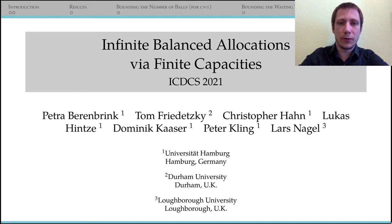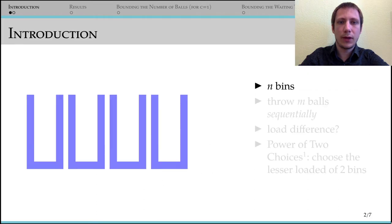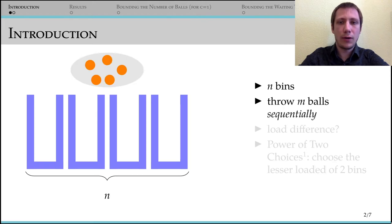Load balancing is often modeled as a balls into bins game. Servers are modeled as bins and jobs are modeled as balls that are thrown into a random bin. Assume there are n bins and we throw m balls randomly into these bins. The question is, how fairly are these balls distributed, or in other words, how big is the load difference between the least and highest loaded bin?